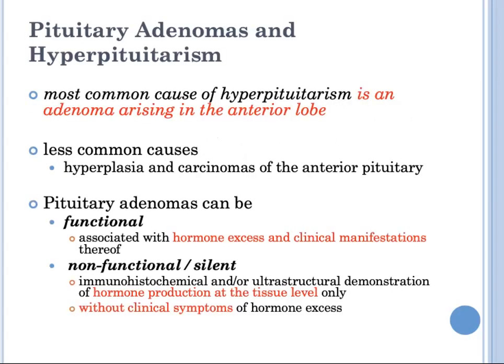The most common cause of hyperpituitarism is an adenoma arising in the anterior lobe. Less common causes include hyperplasia and carcinoma of the anterior pituitary. Pituitary adenomas can be functional or non-functional (silent). Functional adenomas are associated with hormone excess and clinical manifestations, while non-functional or silent adenomas lack clinical symptoms of hormone excess — the excess hormone production is only at the tissue level, determined by immunohistochemical or ultrastructural methods only.